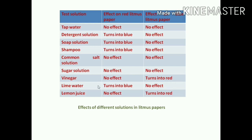But vinegar changes the blue litmus paper into red. So this vinegar is an acid. Next lime water - lime water turns the red litmus paper into blue, but it has no effect on blue litmus paper. So lime water is a base.